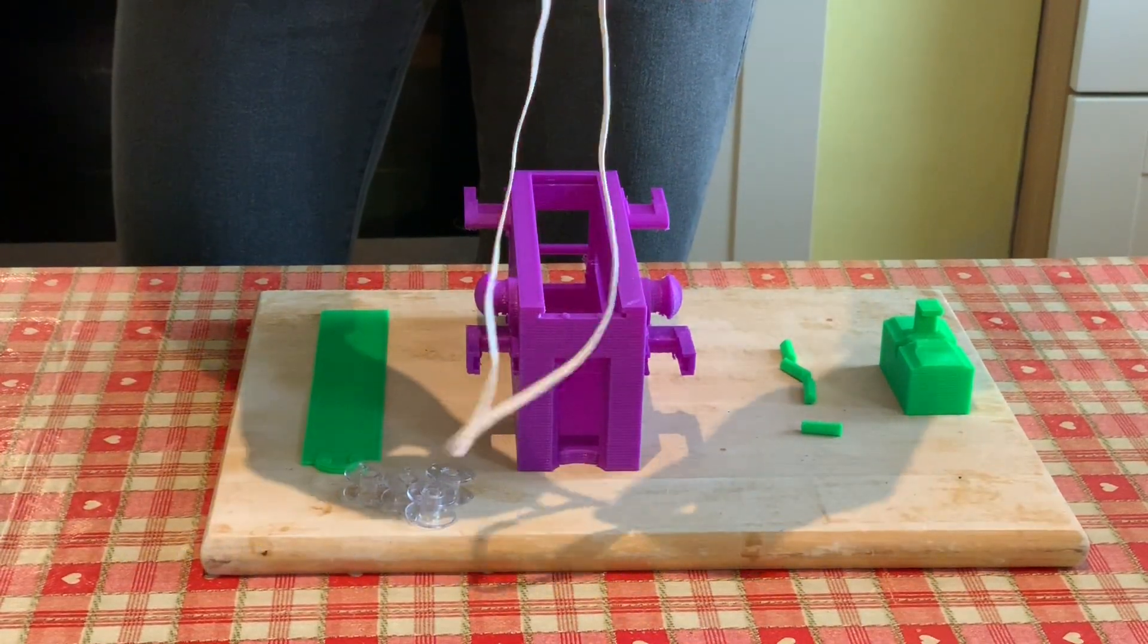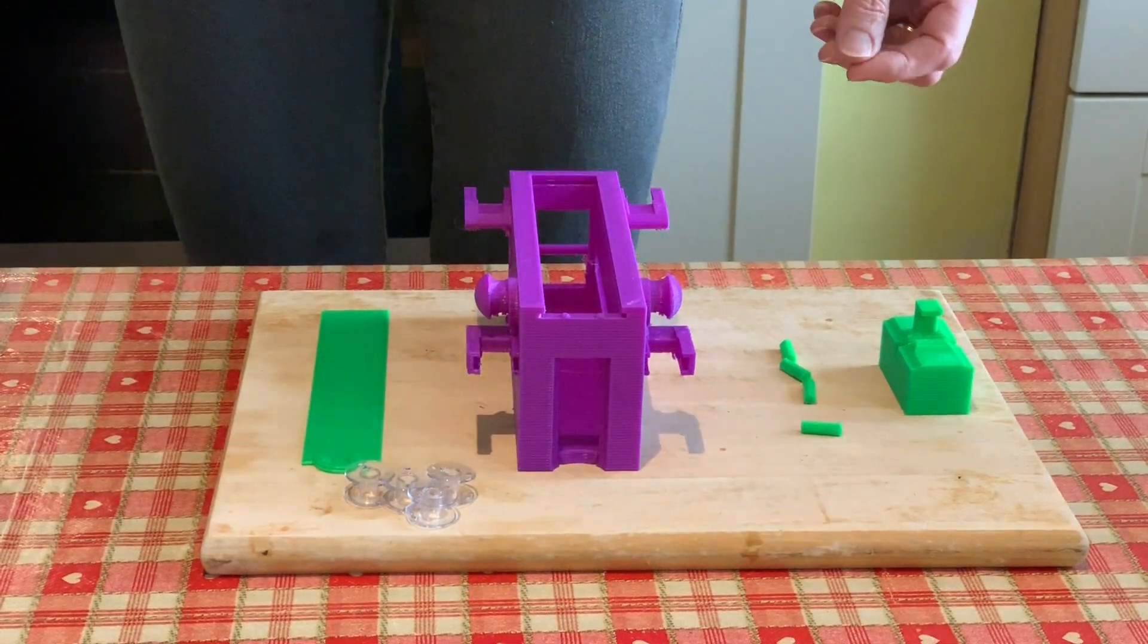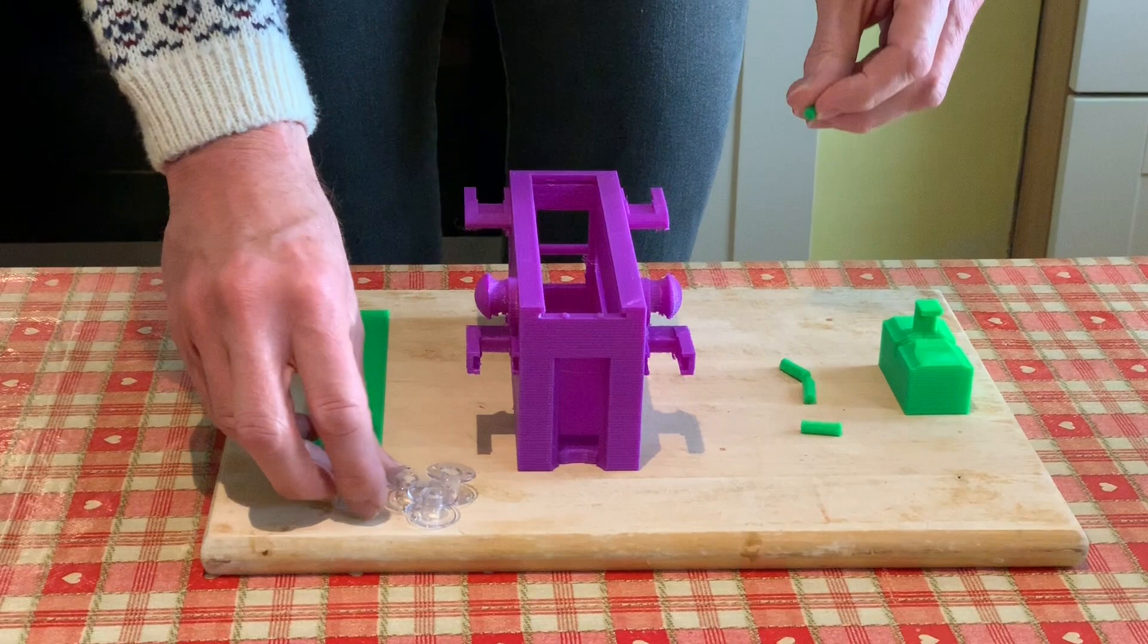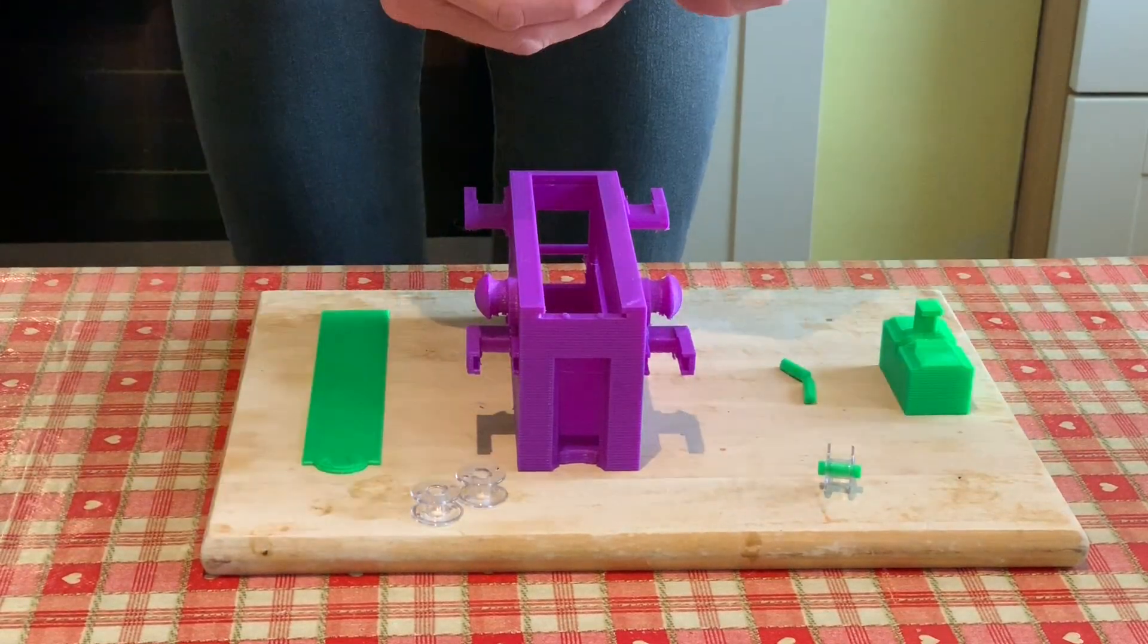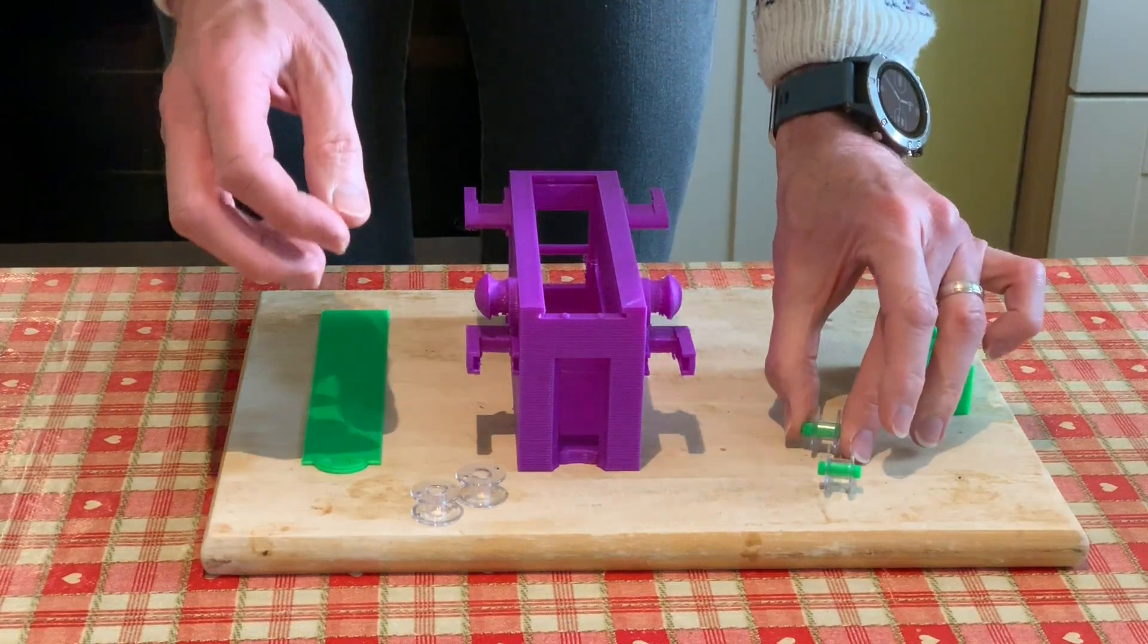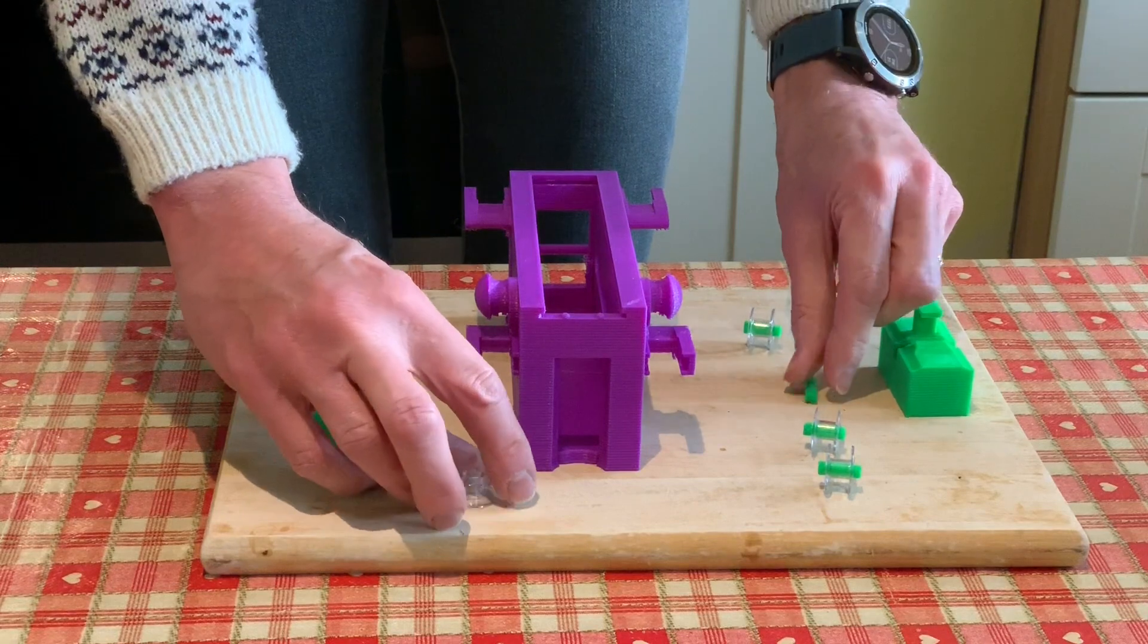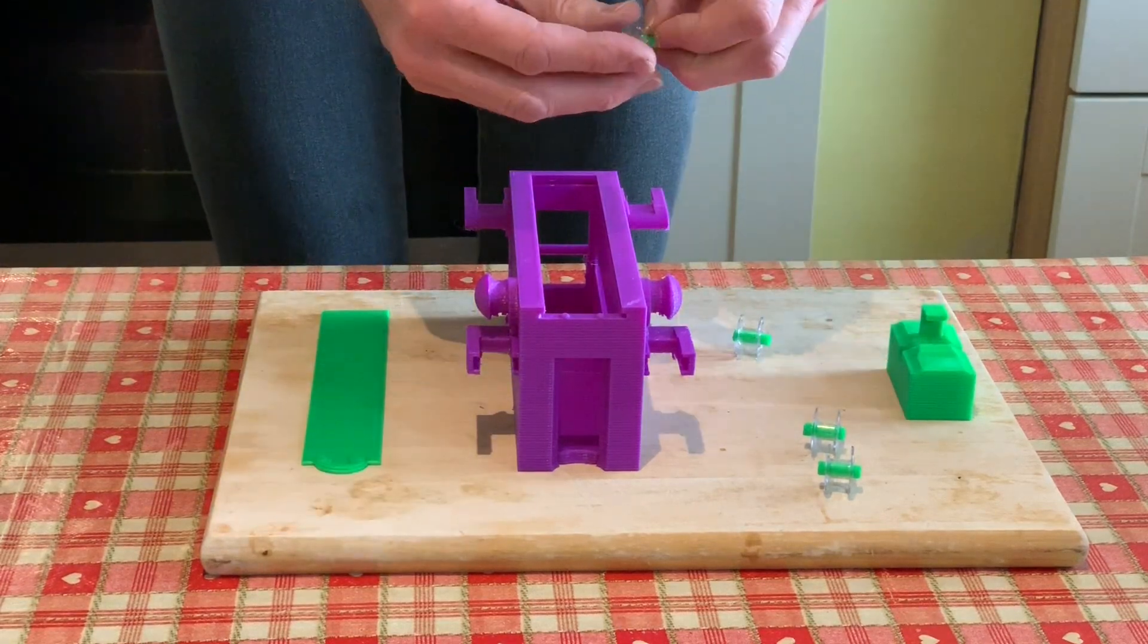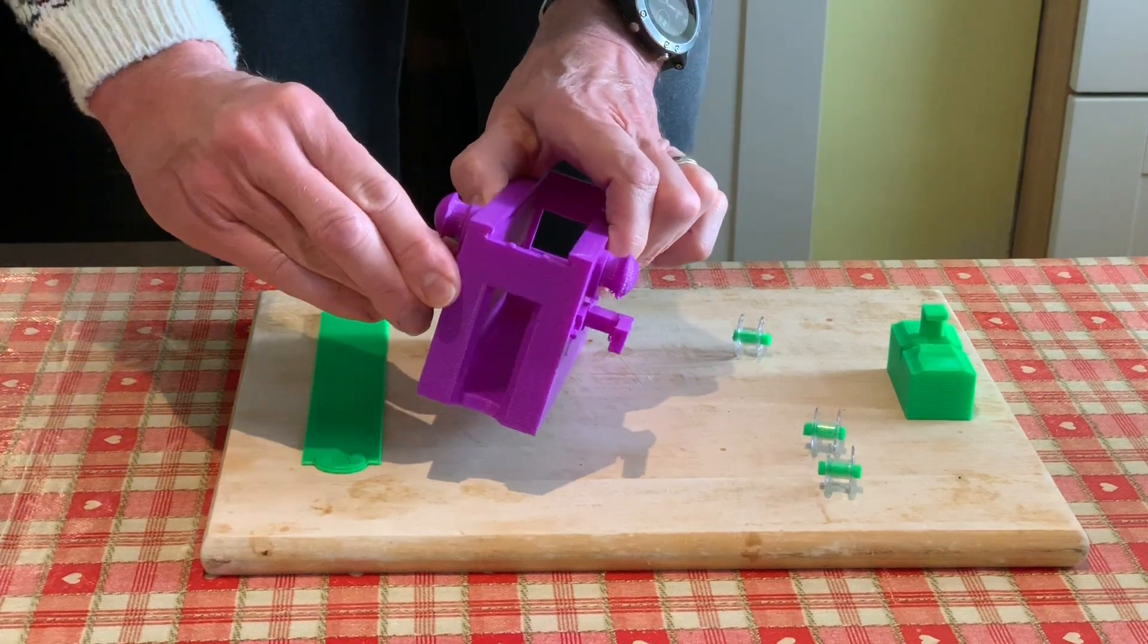So to assemble the dispenser, I'll put one of these little dowels through each bobbin and slot these in like so.